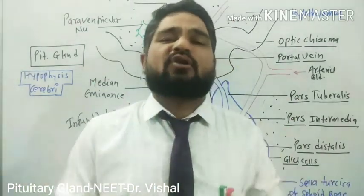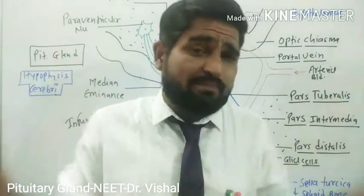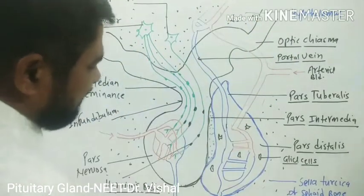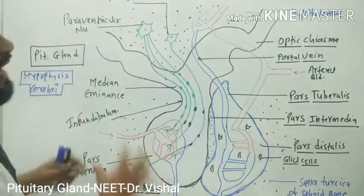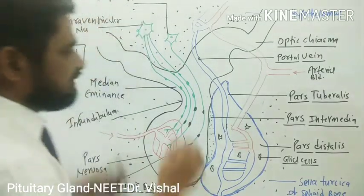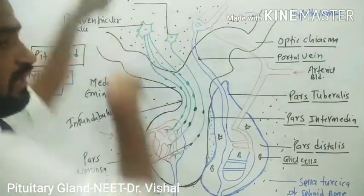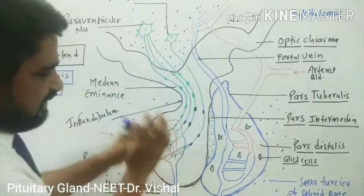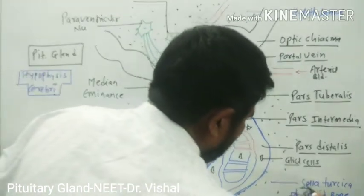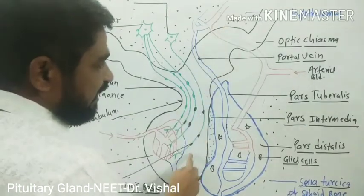I am going to give details about all the parts because these are very essential for your exam. This is the diagrammatic representation of the pituitary gland. I am using different colors to show the differences between parts. The pituitary gland is located below the hypothalamus — this dotted area is the hypothalamus — in the brain, in a small saddle-shaped cavity called the sella turcica.